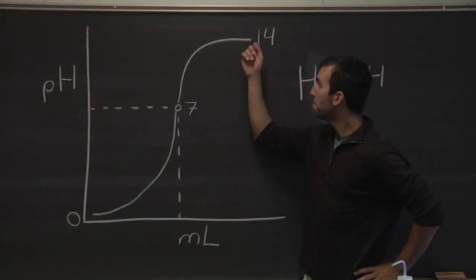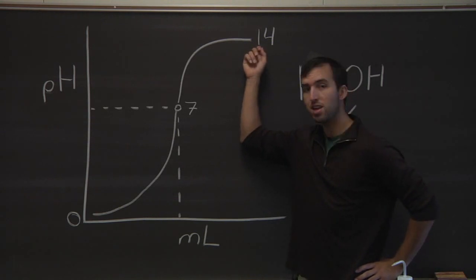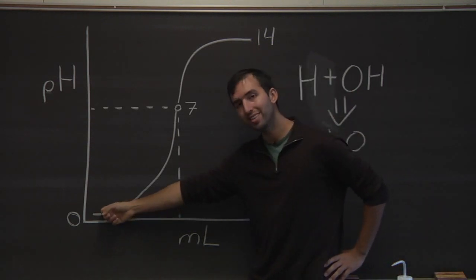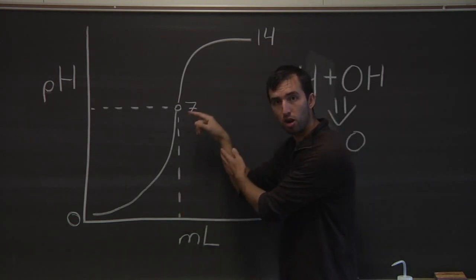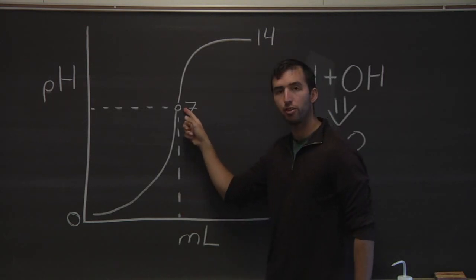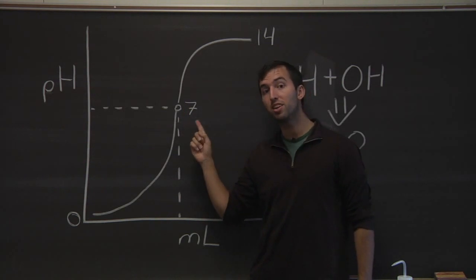Remember from last semester, bases are very high in pH while acids are very low in pH. If you mix a strong acid and a strong base, they will come together at a pH of 7, which is the pH of water.